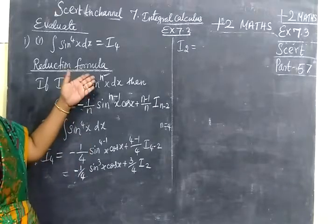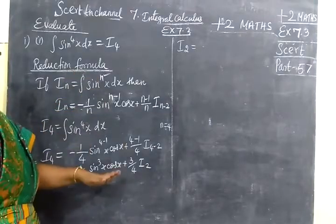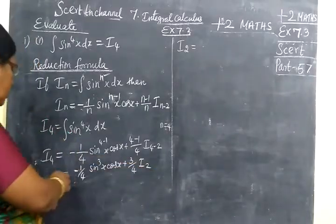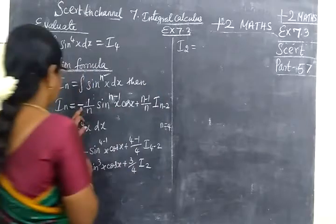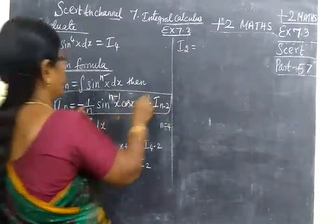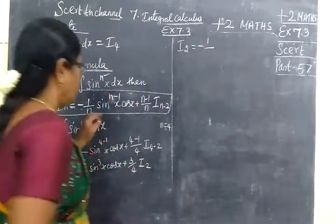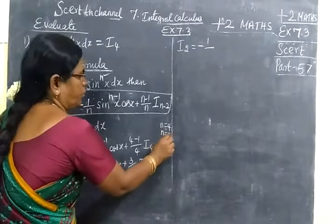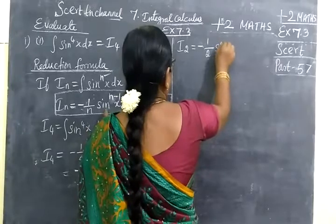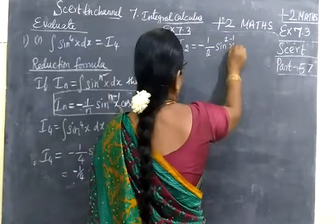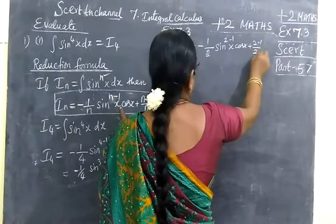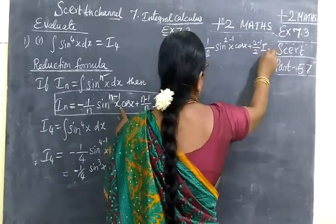Reduction formula helps in the lower form: I₄, I₂, I₀. Now you will write I₂ equal to, using this formula. So minus 1 by 2, n is now equal to 2. So 1 by n where n is 2, sin^{2-1}, cos, plus 2 minus 1 by 2, I_{2-2}.